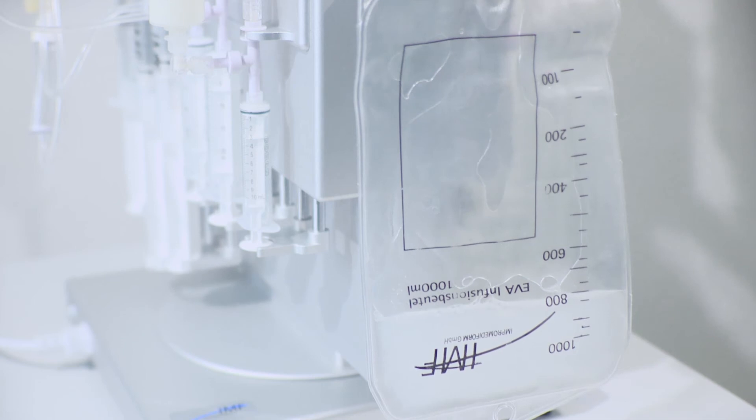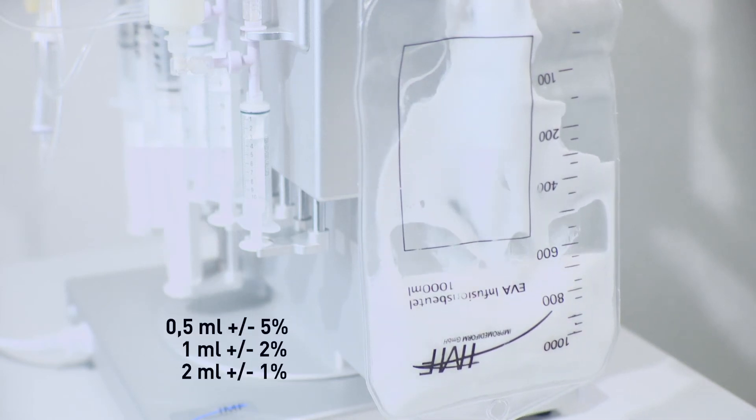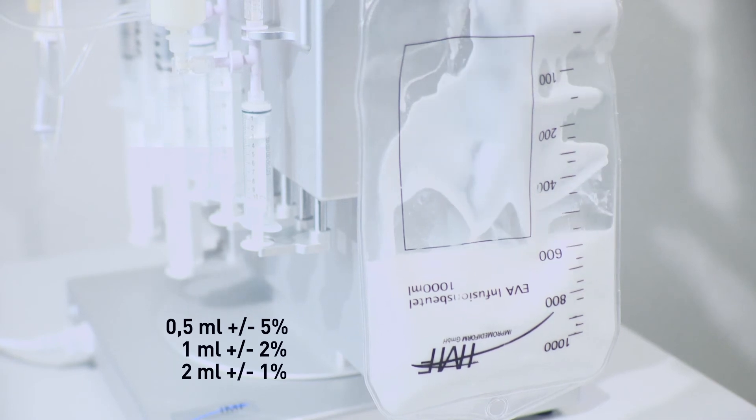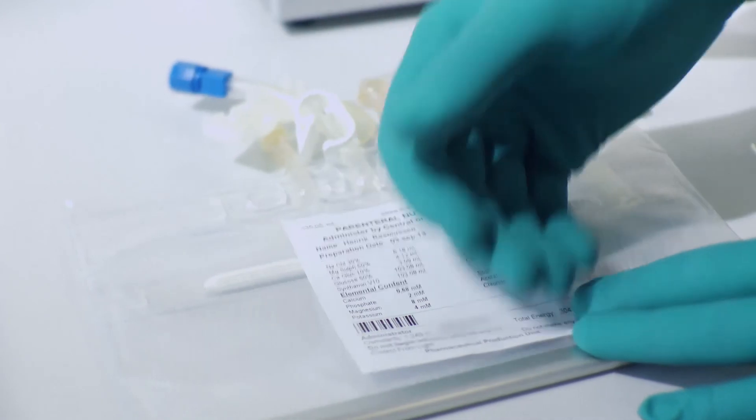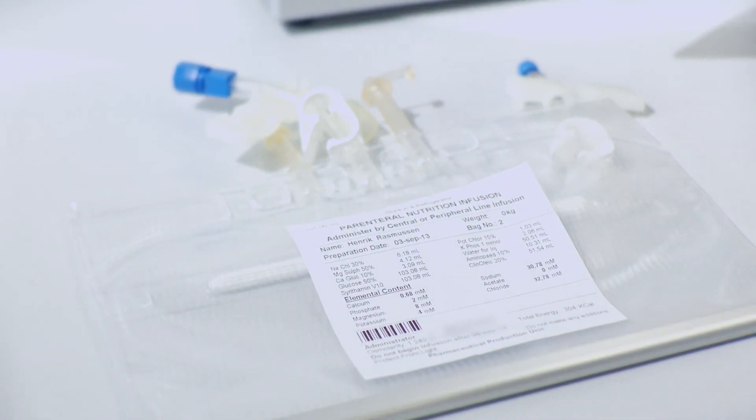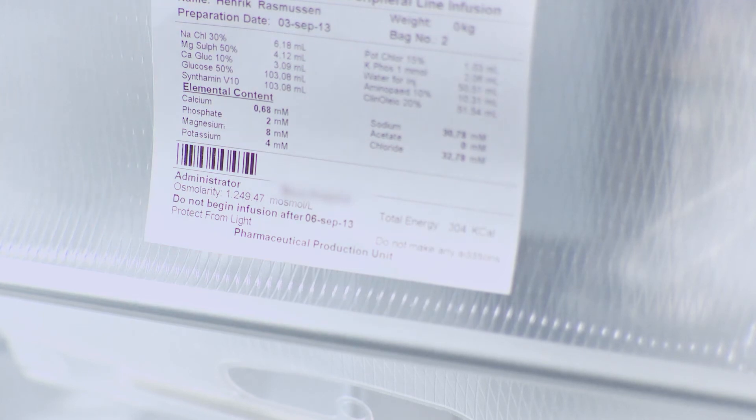The system pumps suggested volumes as low as 0.5 milliliters with a variation of 5%. The barcode technology can also be used for the selection of patient files by scanning the label barcode. This will ensure the proper formula is pumped for each patient.